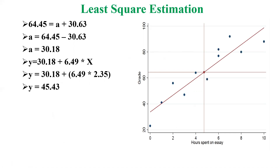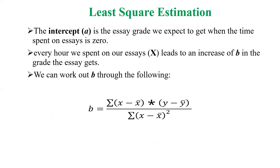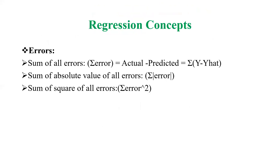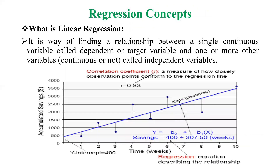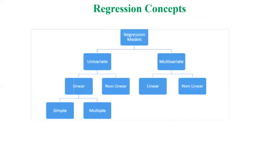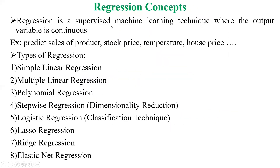Substituting these values, we can compute the slope b and intercept a with respect to hours spent on essay and grades. The main point of least square estimation is to observe the equation and minimize the difference between actual and predicted values. By squaring the errors and minimizing them, we reduce overall error. This is the fundamentals of regression and how we apply least squares estimation.